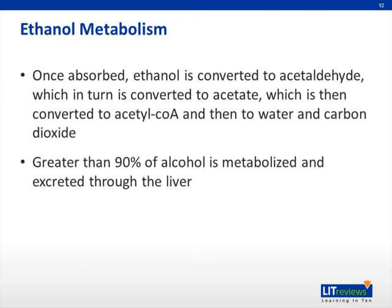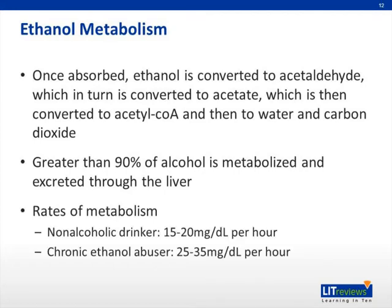Greater than 90% of alcohol is metabolized through the liver. For the non-drinker, they metabolize ethanol at 15 to 20 milligrams per deciliter per hour, whereas the chronic ethanol abuser metabolizes faster at 25 to 35 milligrams per deciliter per hour.